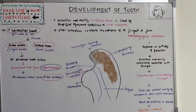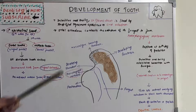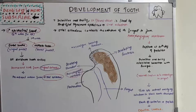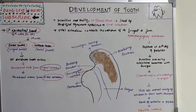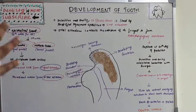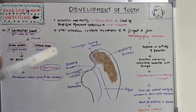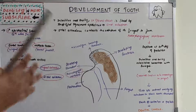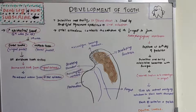Hello everyone, welcome back to another session in Dentistry and More. Today's chapter is development of tooth. It is a very basic chapter in dental histology — the foundation of dental histology — so all the future chapters like enamel, dentine, pulp, and alveolar bone are connected to this chapter because it covers the embryonic stage from which all other structures develop. Understanding the terminologies and concepts in this chapter will make it easy to understand future chapters.